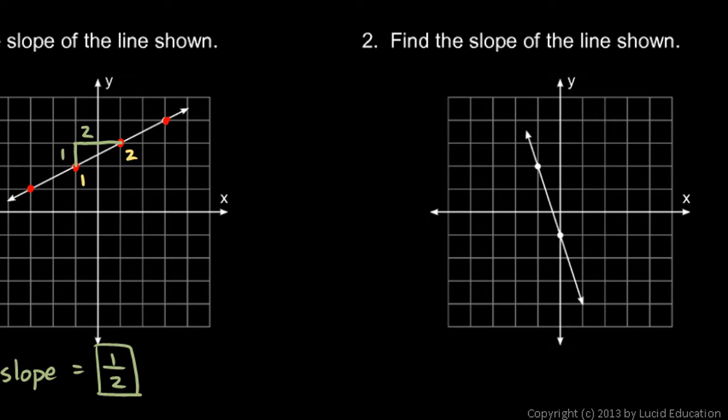For number two, find the slope of the line shown. I'll use those two points that are marked, and think left to right, so that's point one up there and point two down here. Then going from point one to point two, we go down three and over one. So the slope is the rise, which is negative three, over the run, which is one, which is just negative three.